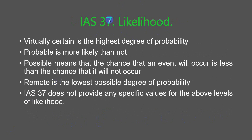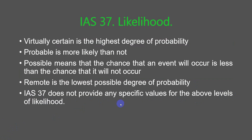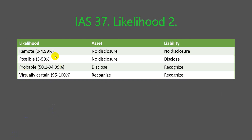A very important term is likelihood. Virtually certain is the highest degree of probability. Probable means more likely than not. Possible means that the chance that an event will occur is less than the chance that it will not occur. Remote is the lowest possible degree of probability. IAS 37 doesn't provide any specific values for the above levels of likelihood, but the following example can be used as a basis for defining remote, possible, probable, and virtually certain.